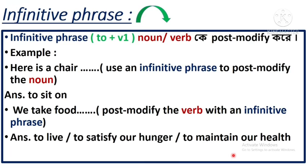An infinitive phrase can be used as a post-modifier. 'Here is a chair to sit on' — here 'to sit on' is an infinitive phrase and it post-modifies 'chair.' Another example: the infinitive phrase 'to leave' can also function as a post-modifier.